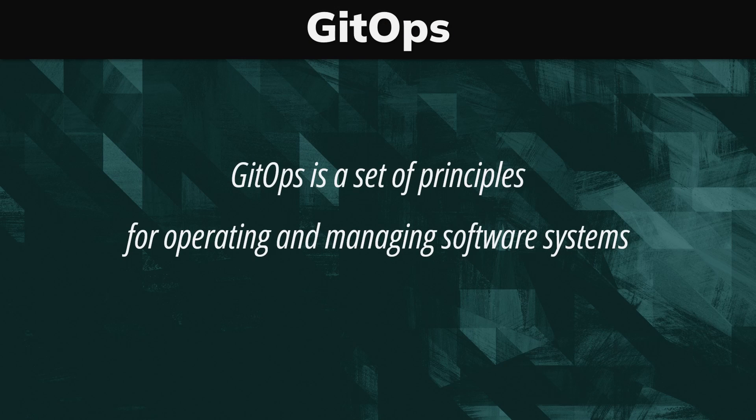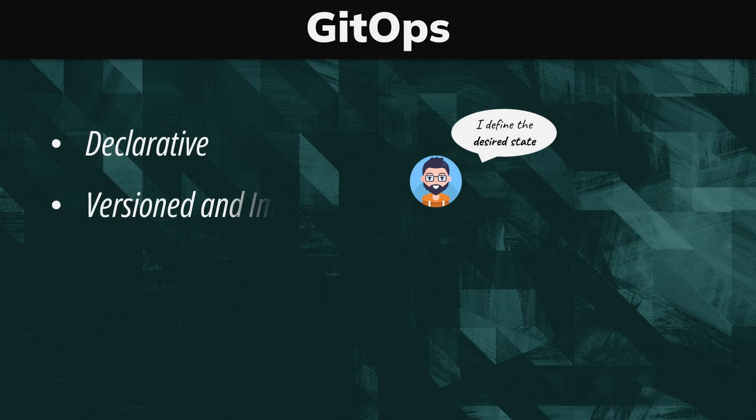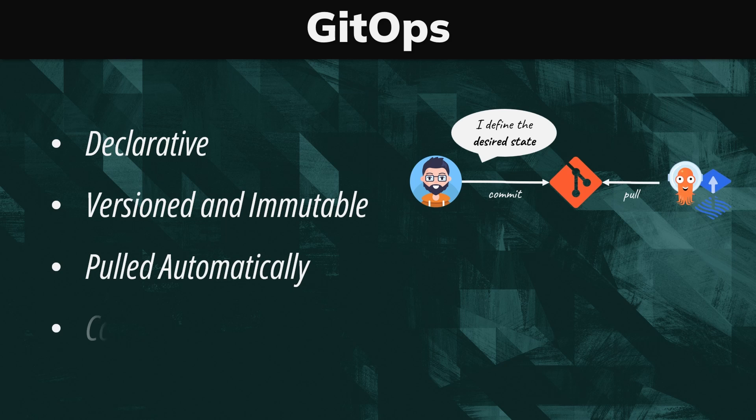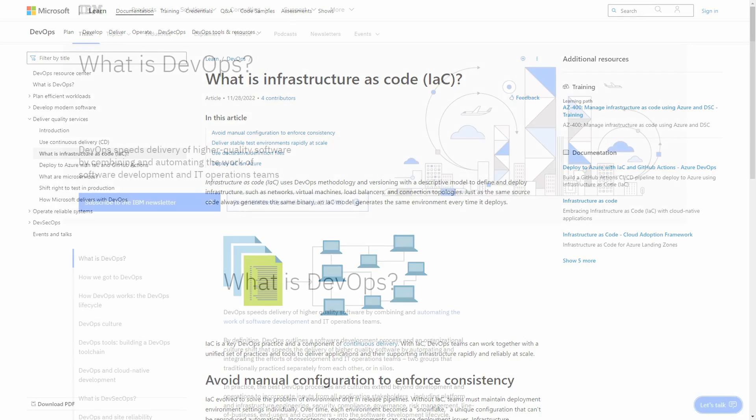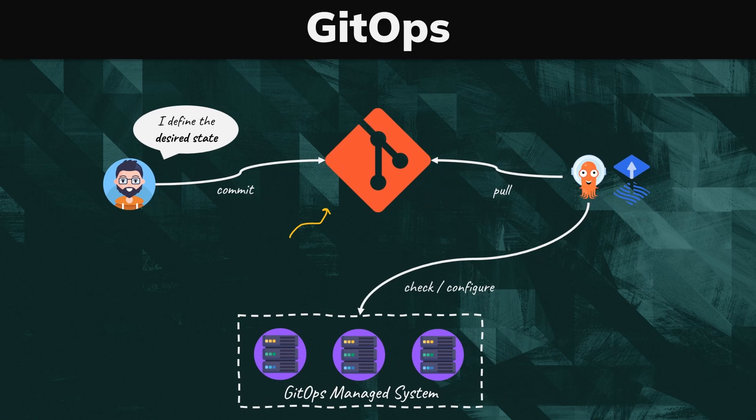What's GitOps? GitOps is a set of principles for operating and managing software systems. The official definition is that the desired state of a GitOps managed system must be declarative, versioned and immutable, pulled automatically, and continuously reconciled. These principles are derived from modern software operations like Infrastructure as Code and DevOps, and are also rooted in pre-existing, widely adopted software development best practices like version control and continuous integration. The name derives from the idea that Git acts as the ultimate source of truth and driver of all operations.